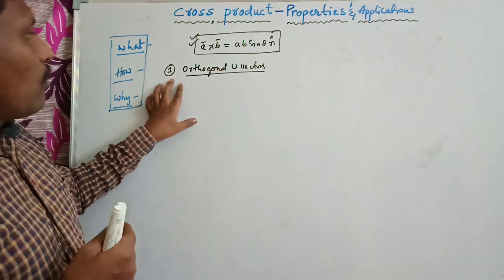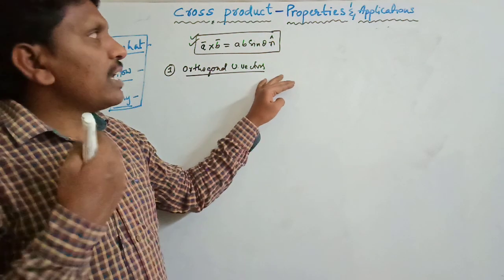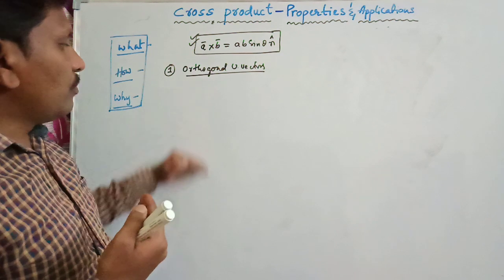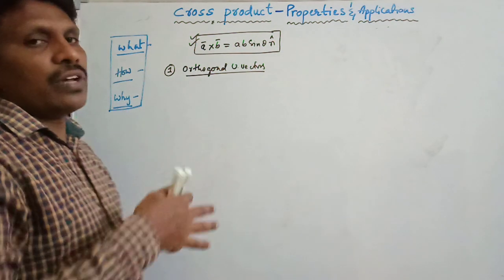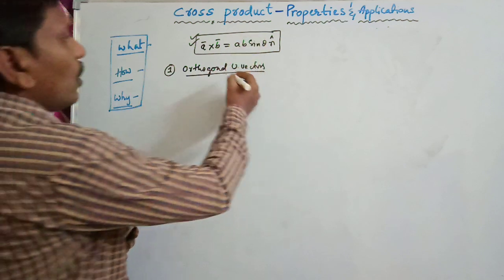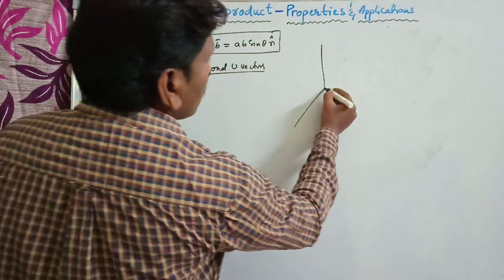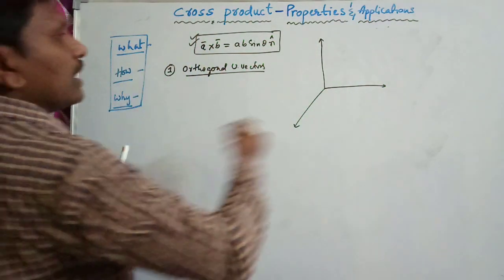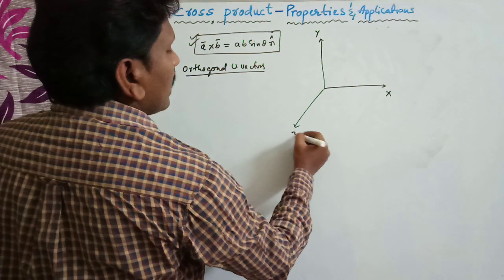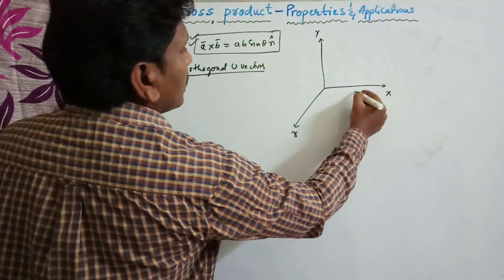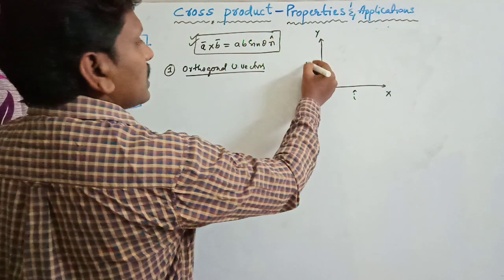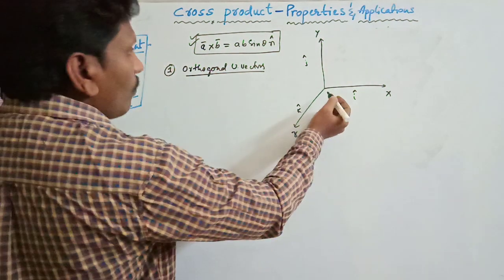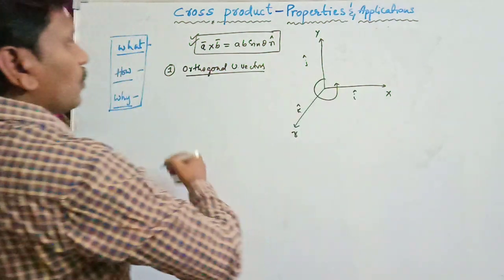In the beginning, I would like to explain from the orthogonal vectors. There are many properties, but I am going to explain only the few which are very useful for problem solving. To understand orthogonal vectors, let us assume a three-dimensional plane with x, y and z axes. Let us consider i cap along the x axis, j cap along the y axis, and k cap along the z axis. So these are the orthogonal vectors.